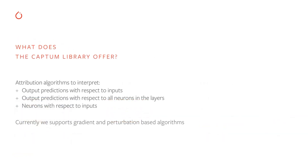Our current version 0.2.0 contains a number of well-tested gradient and perturbation-based attribution algorithms. Those algorithms allow us to interpret output predictions with respect to the inputs, the output predictions with respect to all neurons in the layers, and the neurons with respect to the inputs.